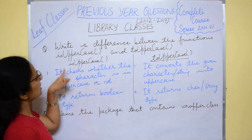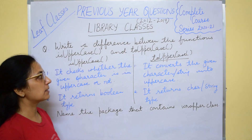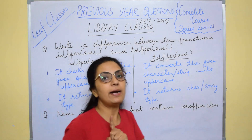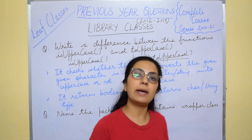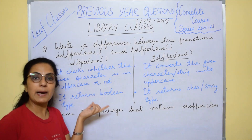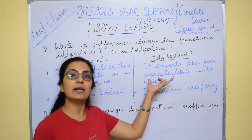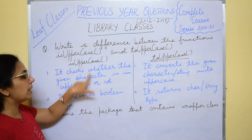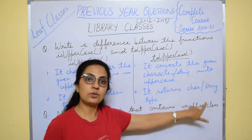Now moving to year 2018. Write a difference between the functions isUpperCase and toUpperCase. Only one difference is required; here I am writing two. First: isUpperCase checks whether the given character passed as argument is in uppercase (capital) or not, while toUpperCase converts the given character or string into uppercase. Second difference: isUpperCase returns a boolean value, and toUpperCase returns a char or string type value.